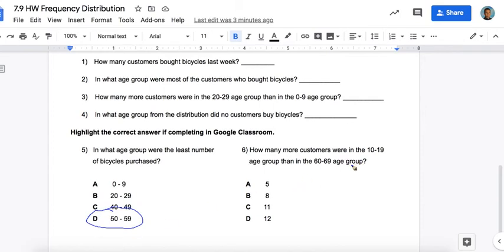And finally, question six: how many more customers were 10 to 19 than 60 to 69? So there were 12 bikes purchased by 10 to 19 year olds, and there was one bike purchased by 60 to 69 year olds. So 12 minus 1 is 11. You should have circled C.